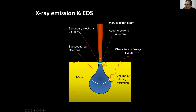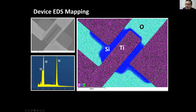When electrons interact with your sample, they can also emit X-rays. If you have a detector to collect this X-ray signal, it can tell you what elements are inside your sample. Here's an example of a device sample using EDS mapping — it can show you where the silicon is, where the metal gate is, and where the oxide is.